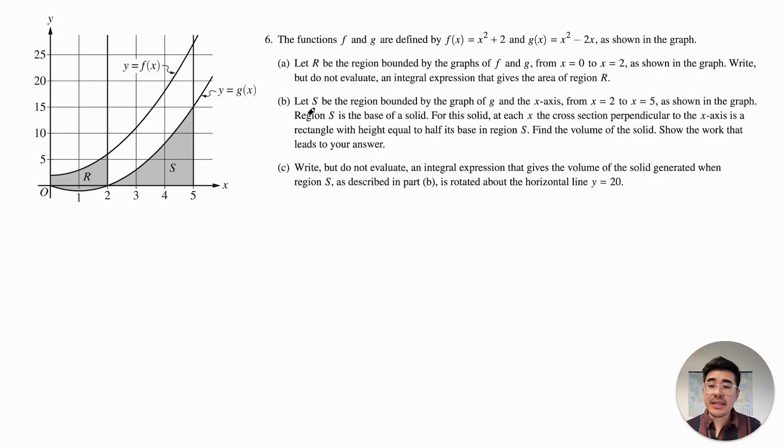Part B says, let S be the region bounded by the graphs of g and the x-axis from 2 to 5 as shown in the graph. Region S is the base of a solid. For this solid, at each x, the cross section perpendicular to the x-axis is a rectangle with its height equal to half its base in region S. Find the volume of the solid. Show the work that leads to your answer. So again, we want vertical slices because we want our slices to be perpendicular to whatever axis we have.